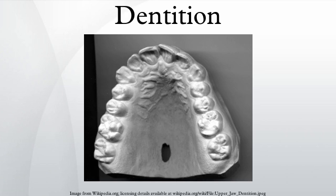Animals whose teeth are all of the same type, such as most non-mammalian vertebrates, are said to have homodont dentition, whereas those whose teeth differ morphologically are said to have heterodont dentition. The dentition of animals with two successions of teeth is referred to as diphyodont, while the dentition of animals with only one set of teeth throughout life is monophyodont. The dentition of animals in which the teeth are continuously discarded and replaced throughout life is termed polyphyodont.